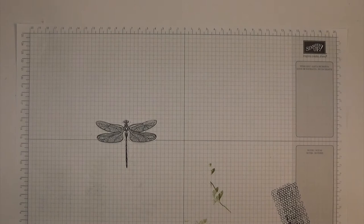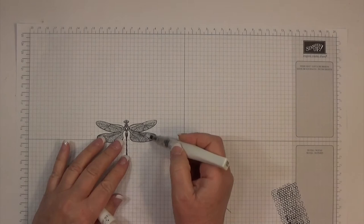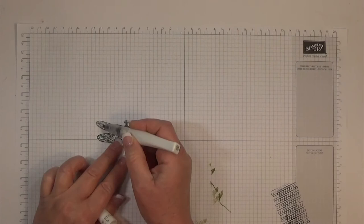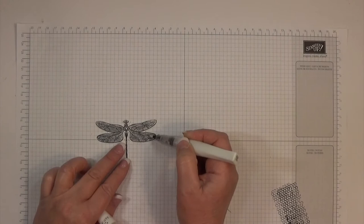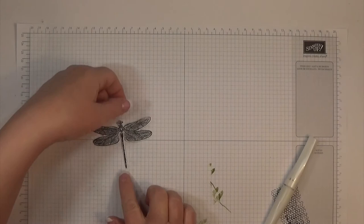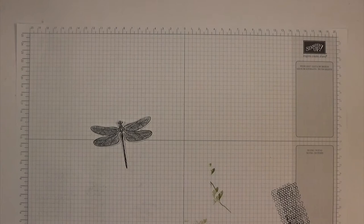Then I'm going to take some Wink of Stella—this is the clear Wink of Stella—just to add a little bit of shine to our dragonfly's wings. I'm just going to color in the wings with this Wink of Stella. I don't know if the camera's going to pick this up or not. We're going to let that dry. There's just a little bit of shimmer—it just adds the tiniest bit of shimmer. I'm going to even do his little body or her little body.